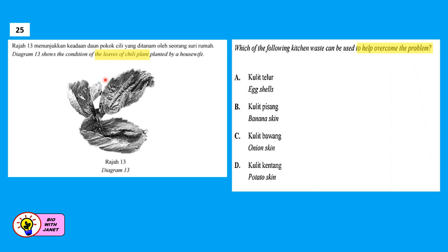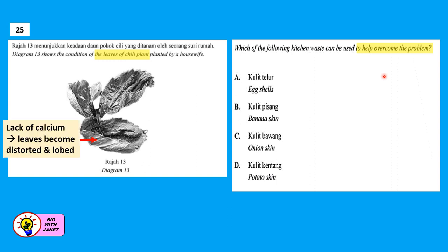Question 25: Diagram 13 shows the condition of leaves of a chili plant — the leaves are curled inwards. This type of condition is due to a lack of calcium. When there's a lack of calcium, leaves become distorted and curl inwards. The remedy is to supply the plant with enough calcium. The source of calcium among the kitchen waste options is eggshells. Answer is A.